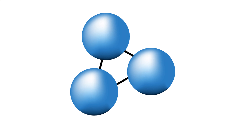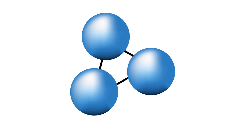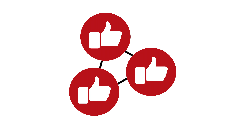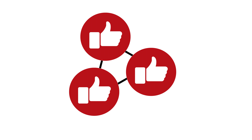Next, we have the stratosphere, which extends from about 12 kilometers up to 50 kilometers. This layer is where you can find the ozone layer. Ozone absorbs most of the sun's harmful ultraviolet radiation and protects us from it. As for the structure of ozone, it is a gas formed by three oxygen atoms.